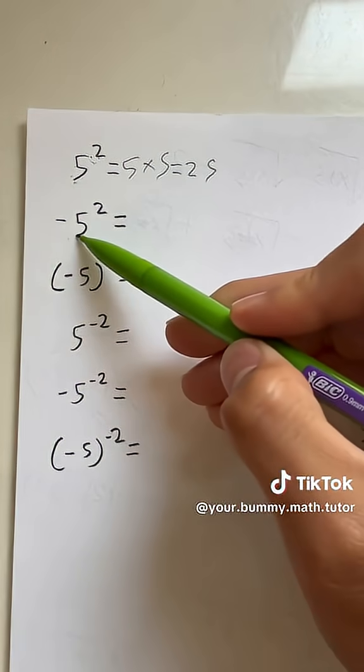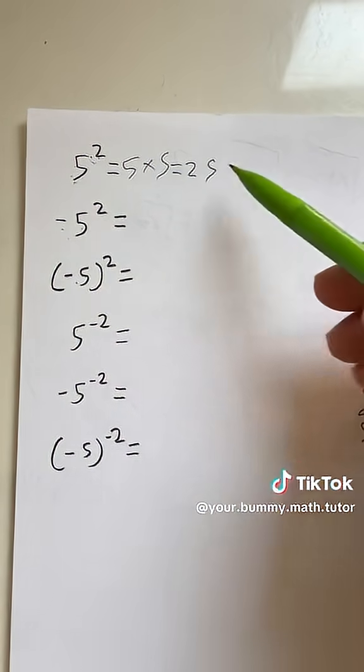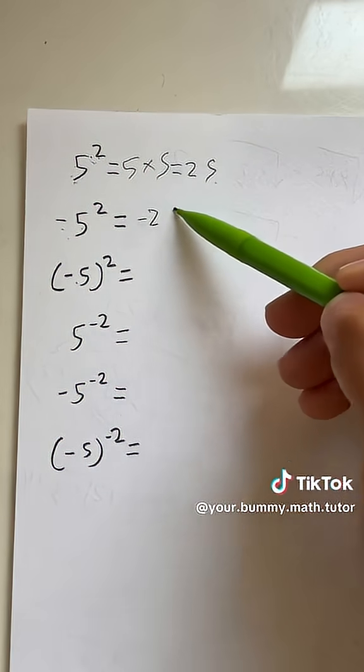What if it's like this? Basically, what this means is that if the negative is not inside the parentheses like this one, you have to do 5 to the second, which is 25, and this is just equal to negative 25.